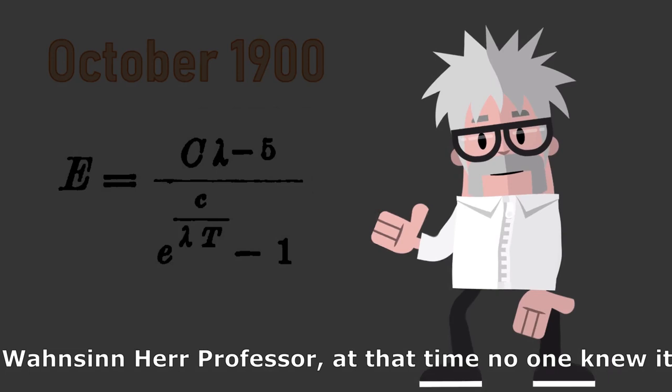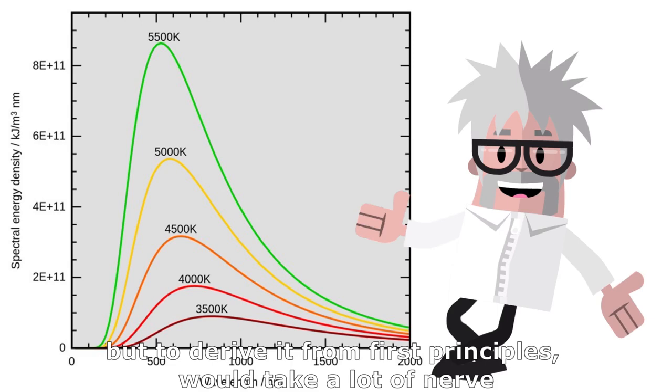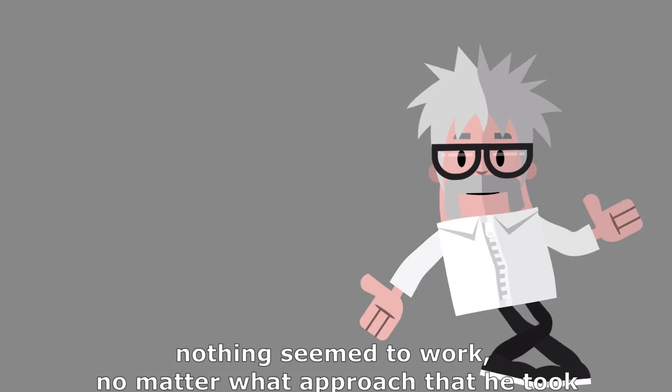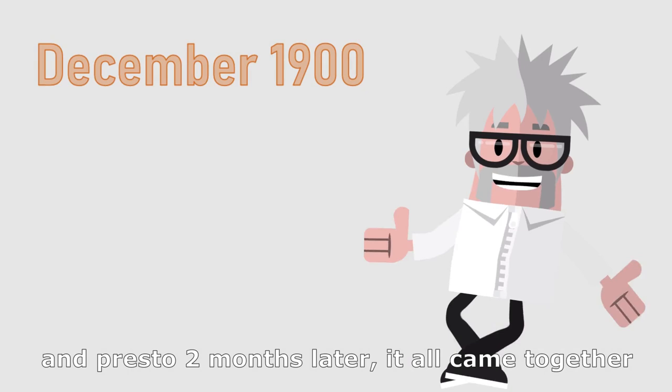First, he got the formula just by looking at the curve. But to derive it from first principles would take a lot of nerve. Nothing seemed to work, no matter what approach that he took. Then he decided to give entropy a much deeper look.